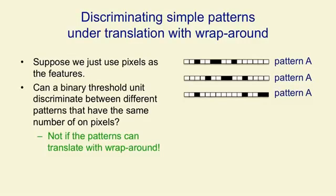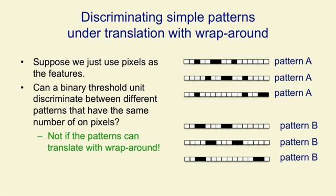If you look at examples of pattern A in a one-dimensional image, pattern A has four pixels that are on — like a little barcode. It's the same pattern when translated to the right, and we allow wraparound so the pattern goes off the right end and comes back on the left. Pattern B also has four pixels, but in a different arrangement. In the third example of pattern B, it's been translated with wraparound, so it's still an example of pattern B. For two sets of patterns like that, a binary threshold unit cannot learn to discriminate them.